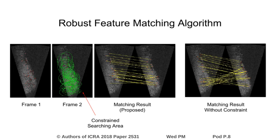By propagating the uncertainty introduced from different sources including vehicle poses, feature point locations, and sensor ambiguity, we narrow down the searching area during feature matching. The constrained feature matching strategy dramatically decreases the number of outliers.